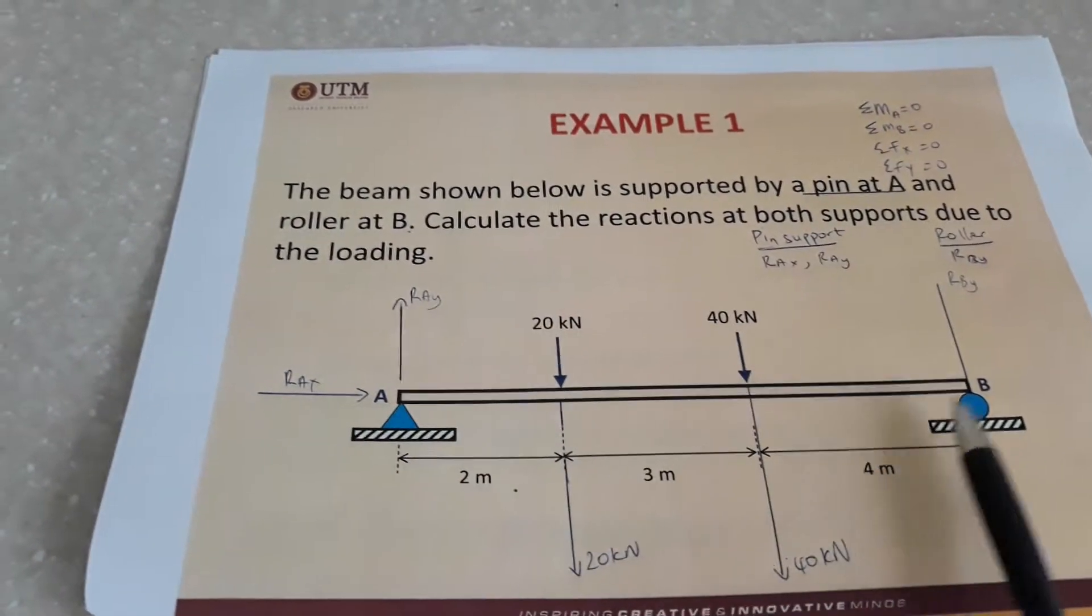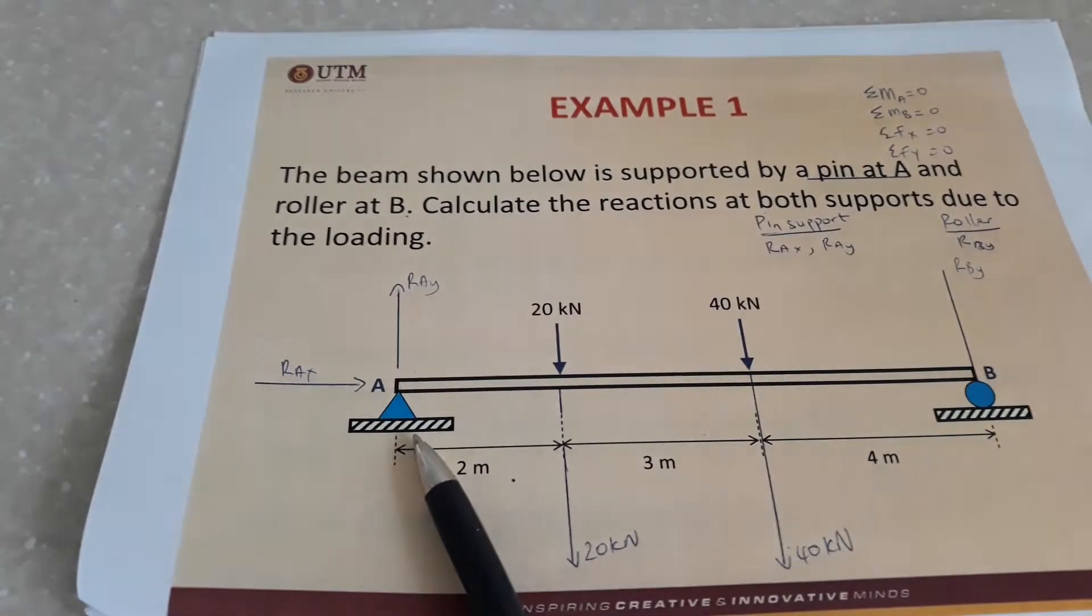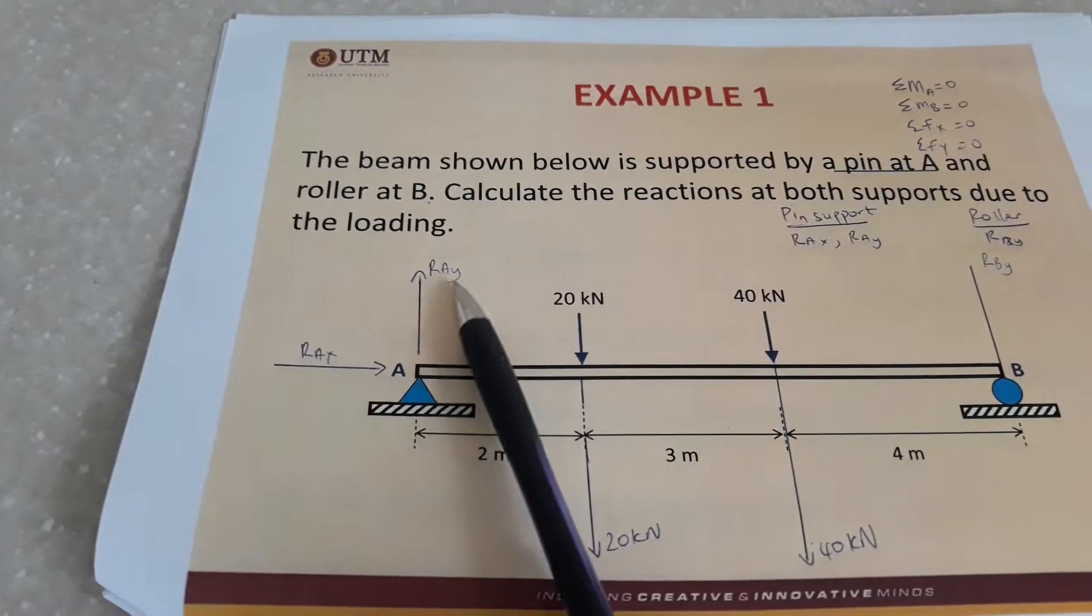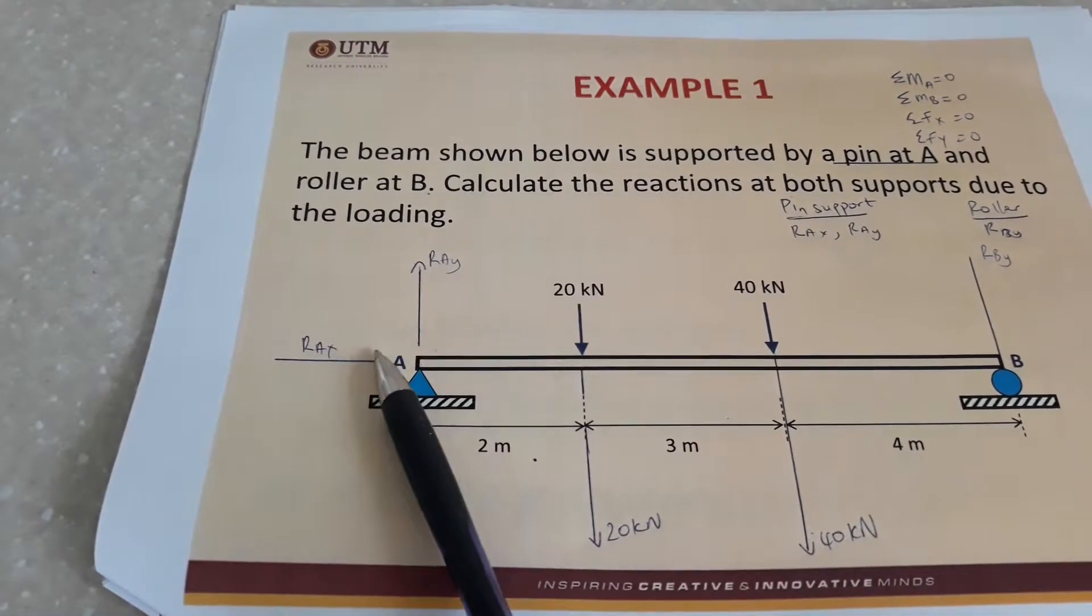The difference with these supports is for pin support it transfers loads in two different directions, usually in the x and y direction, but these are at 90 degrees to each other.